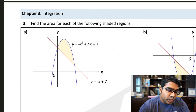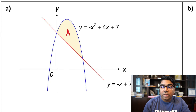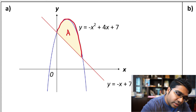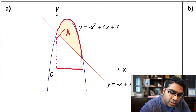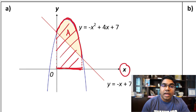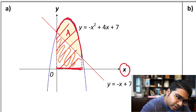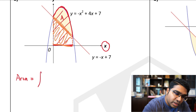Now let's take a look at an area between a line and a curve — a line that is not one of the axes. For this region, we use subtraction. We take the area between the curve and the x-axis by integrating the curve with respect to x, and then subtract the area formed by integrating the line with respect to the x-axis over the same boundaries.